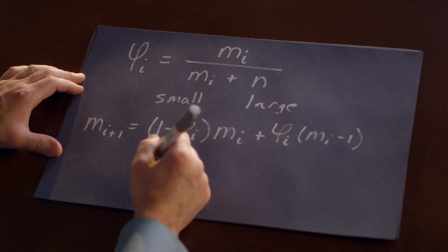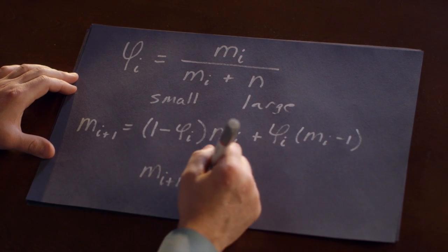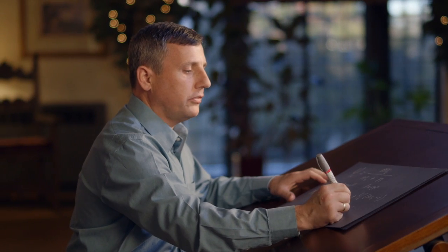So this results after a little algebra in what we call a recurrence relation for the evolution of the number of small pores remaining in the filter.